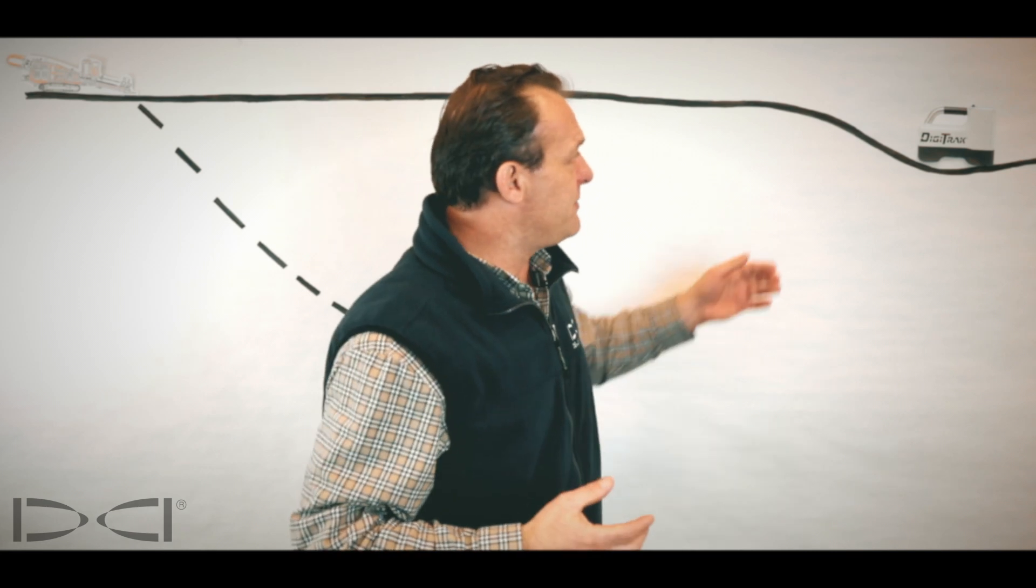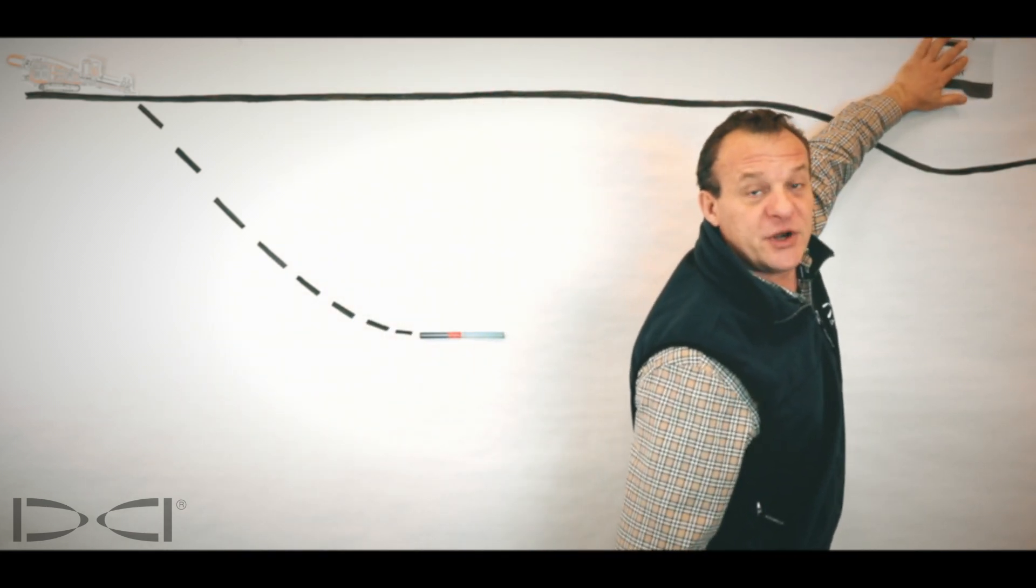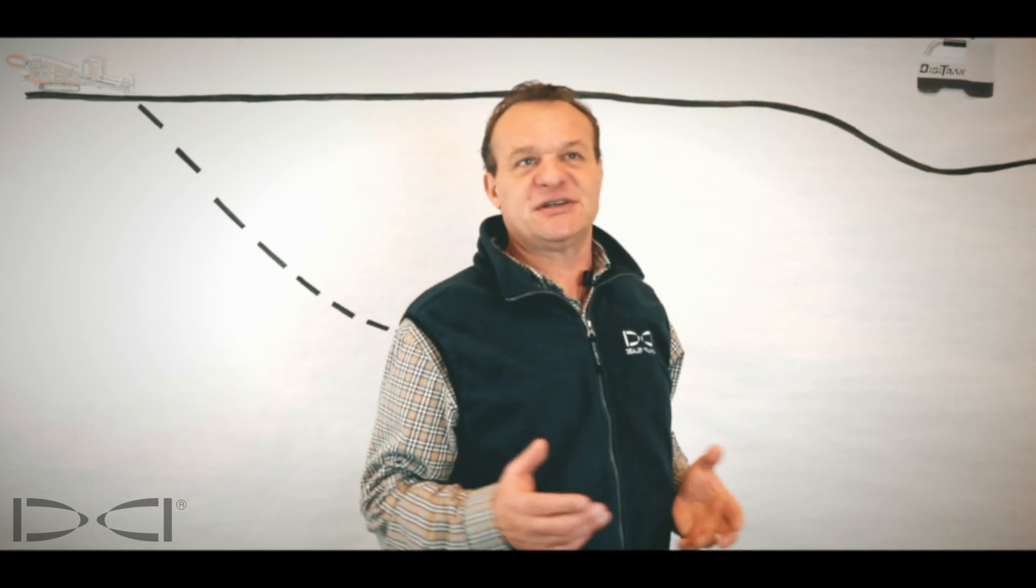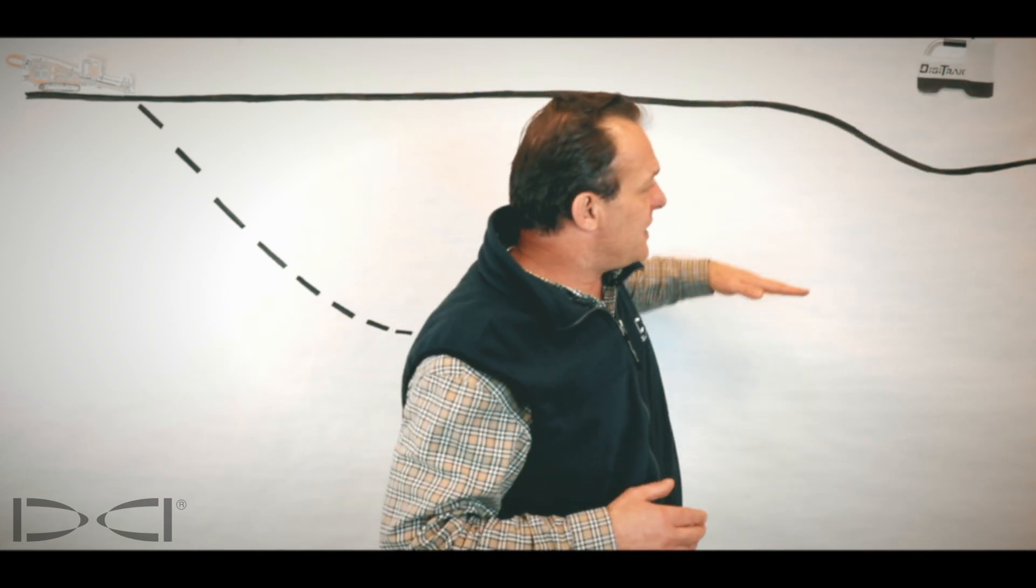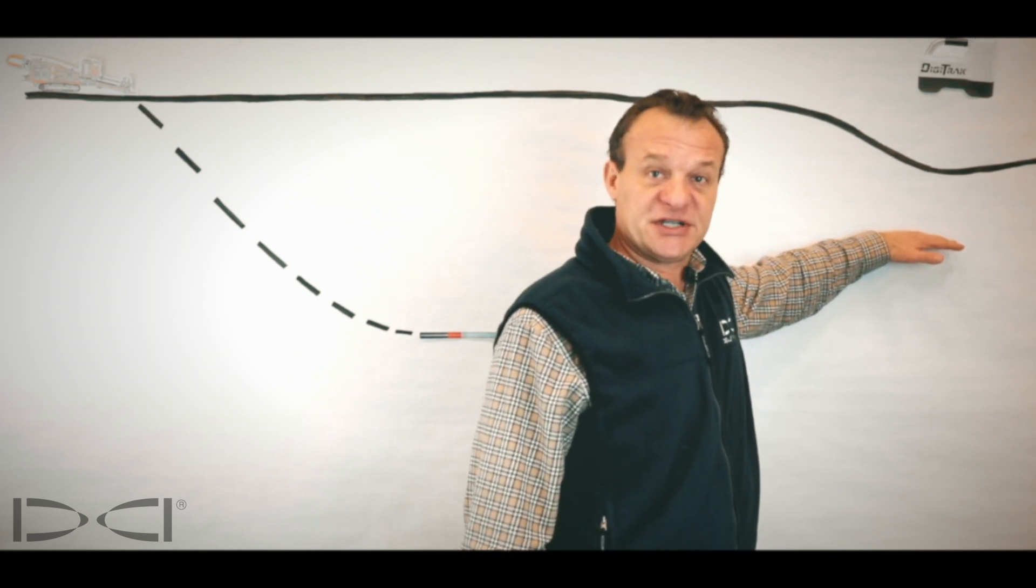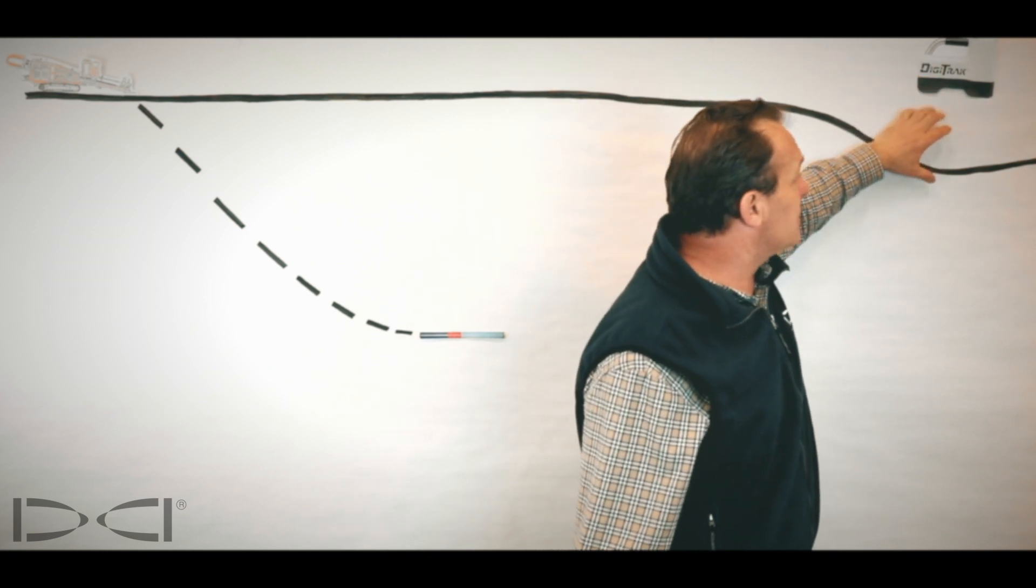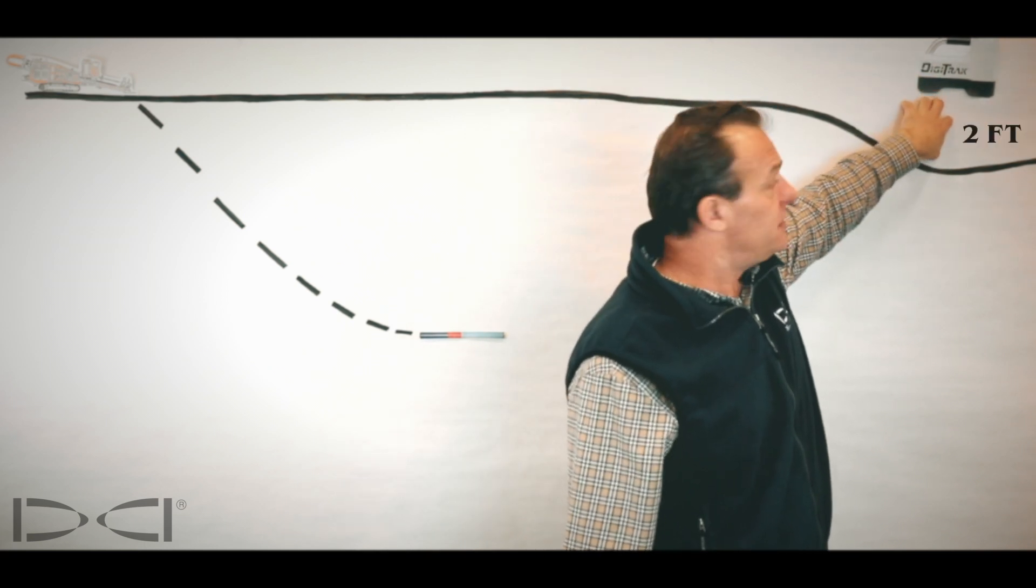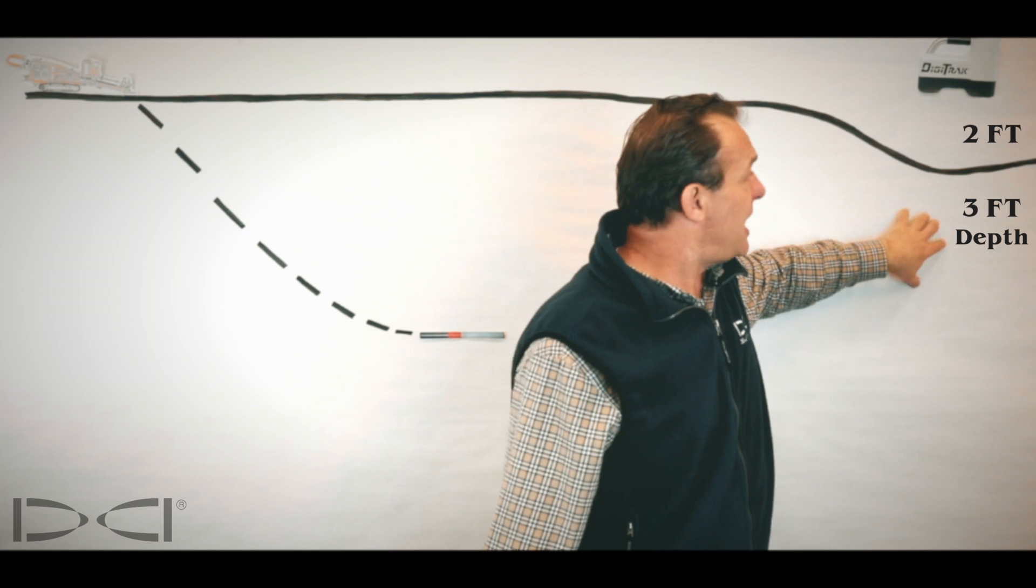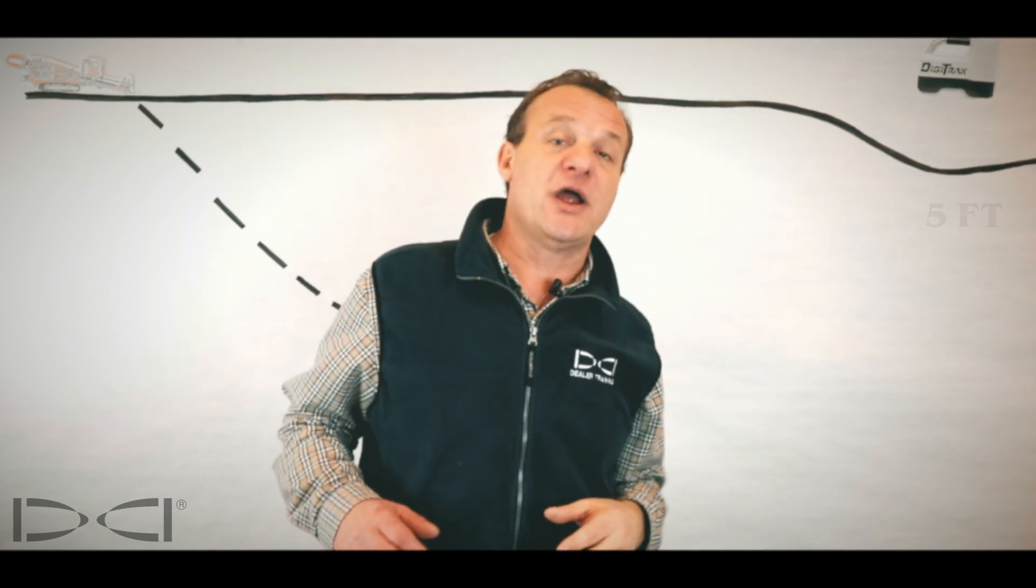And we do that very simply by merely picking up my receiver, putting it up off the ground some distance, let's say two foot. So if I was supposed to come in here at 36 inches, I'm not going to load 36 inches into the target depth value. I need to add this as well. So I've got the box two foot off the ground, three foot depth. I need to load a five foot value in there to account for the fact that I've now got the box up off the ground.